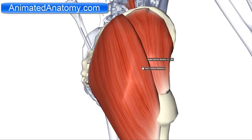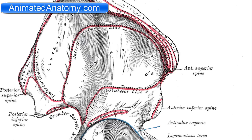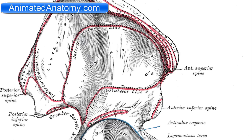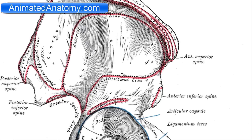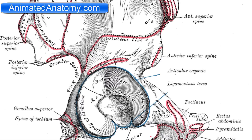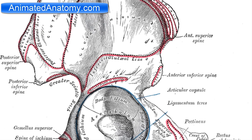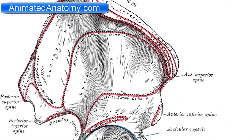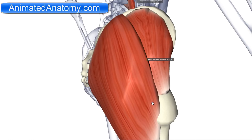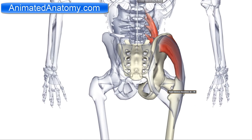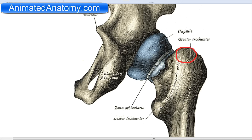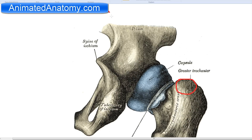The gluteus medius muscle has the origin on the gluteal surface of the ilium, under the gluteus maximus. If I show you the ilium bone here, you will see here where the gluteus maximus had its origin. This here is the acetabulum, the place where the femur and hip bone articulate. And then here is the surface where the gluteus medius arises. The insertion of the gluteus medius muscle is on the greater trochanter on the femur. This is the greater trochanter. So the muscle comes up there from the ilium and attaches to the greater trochanter.